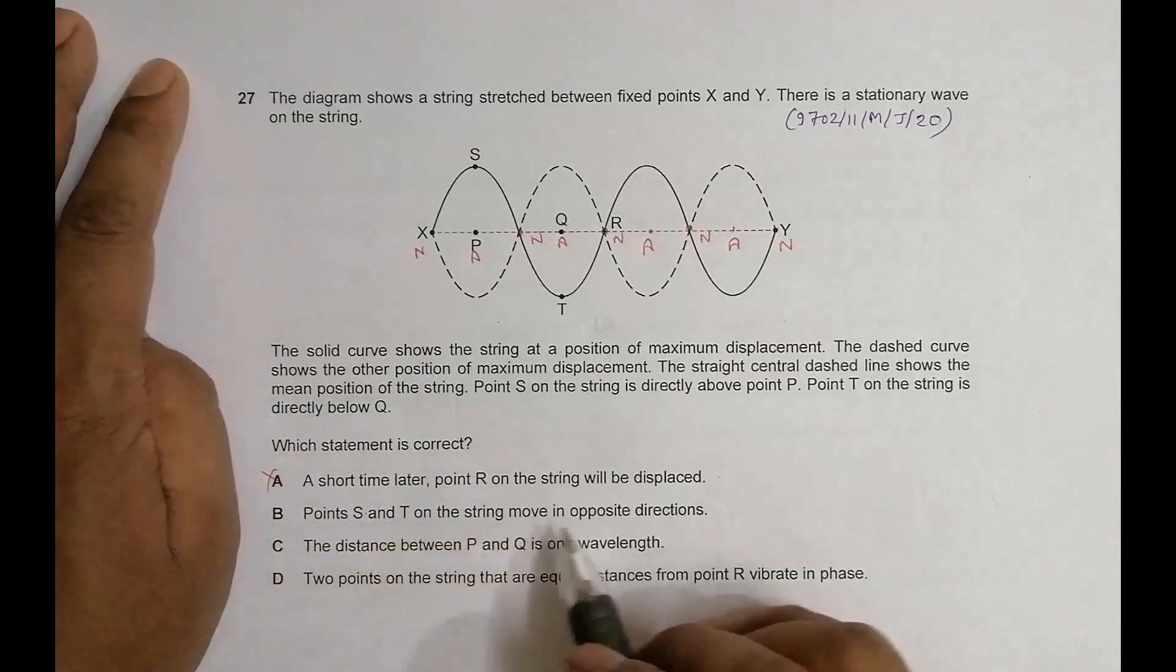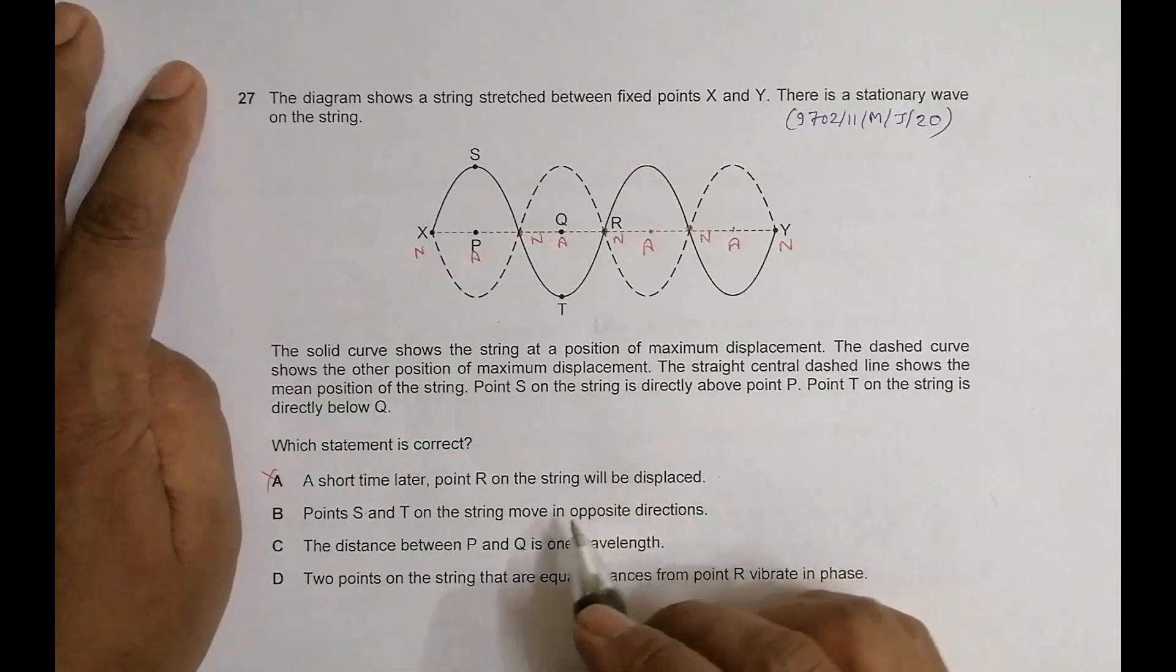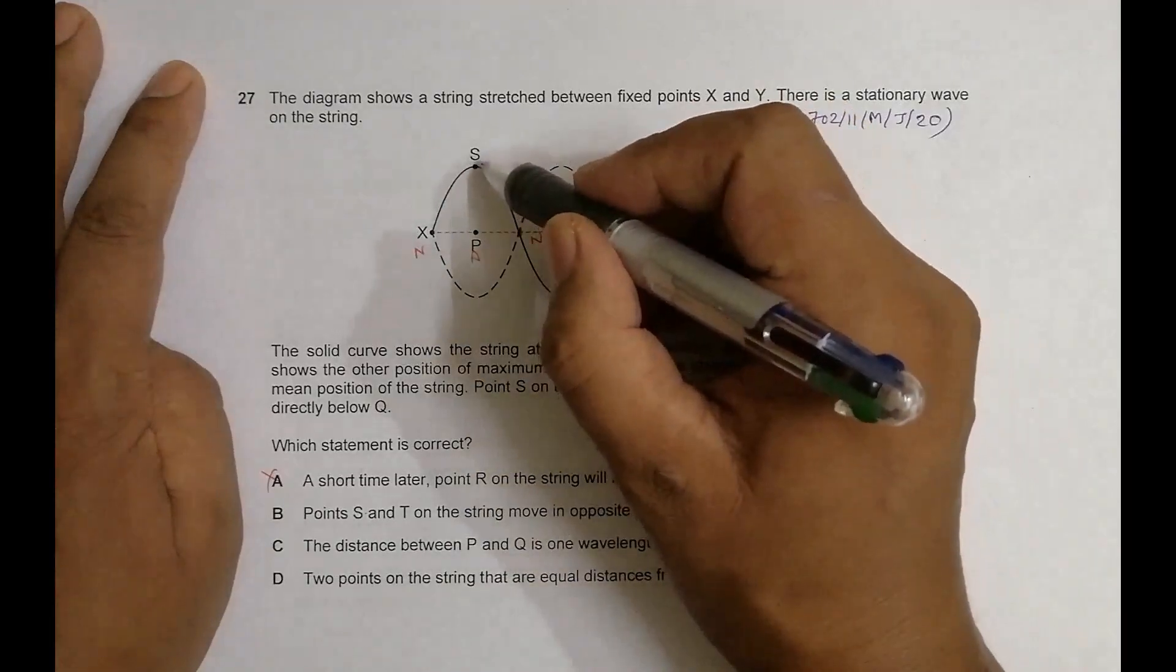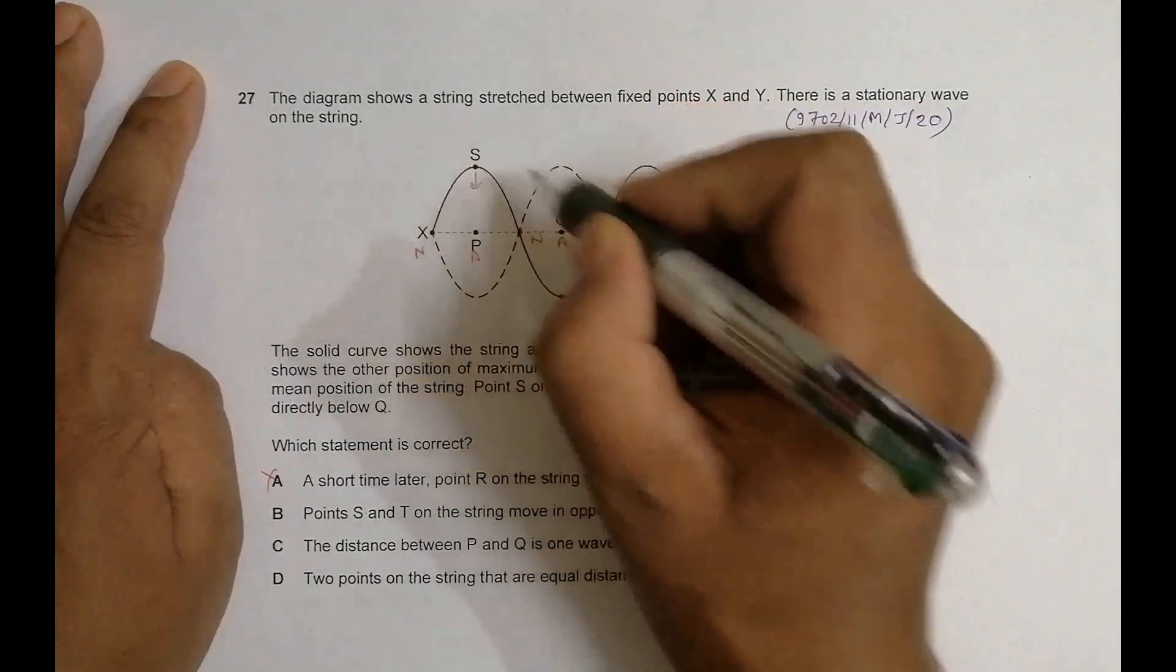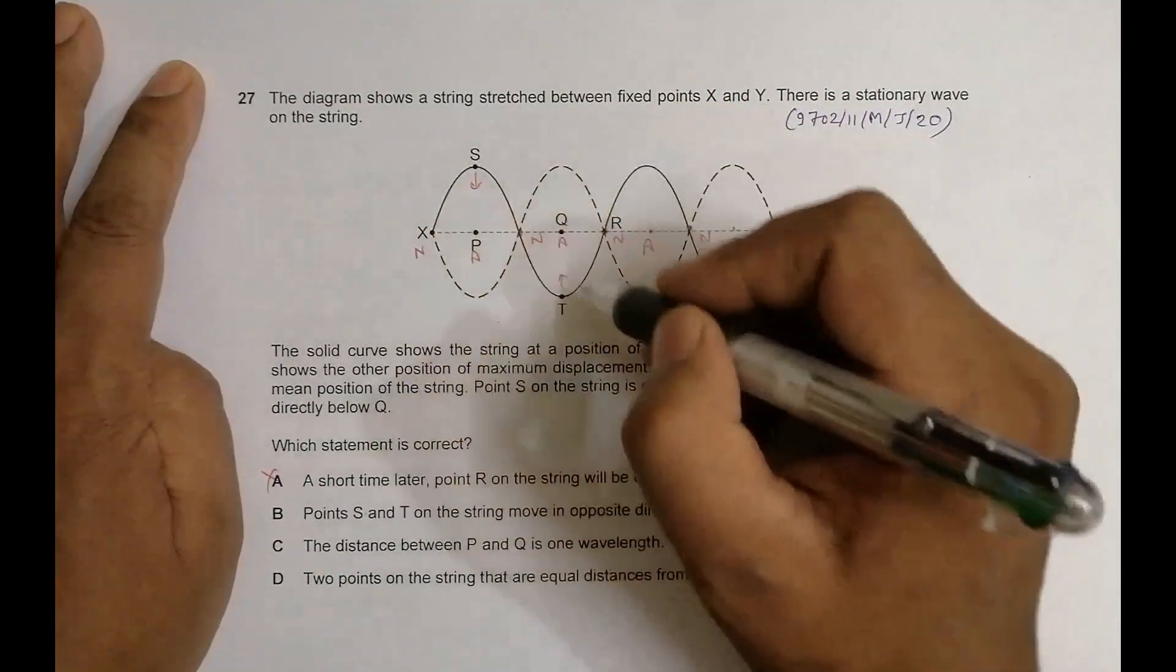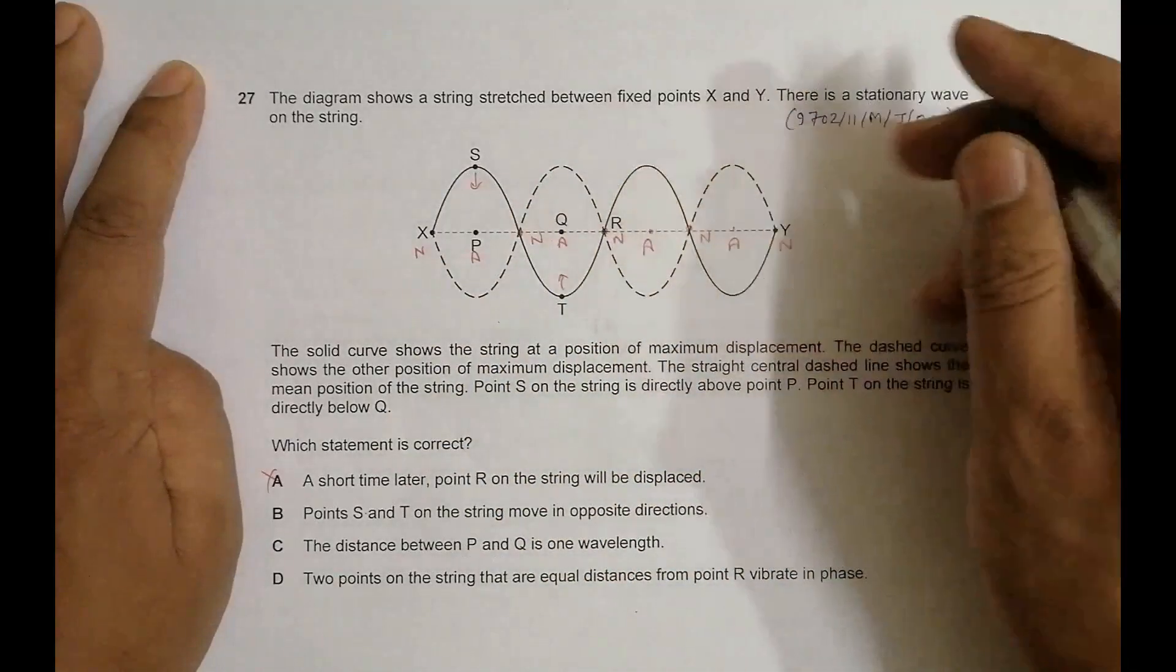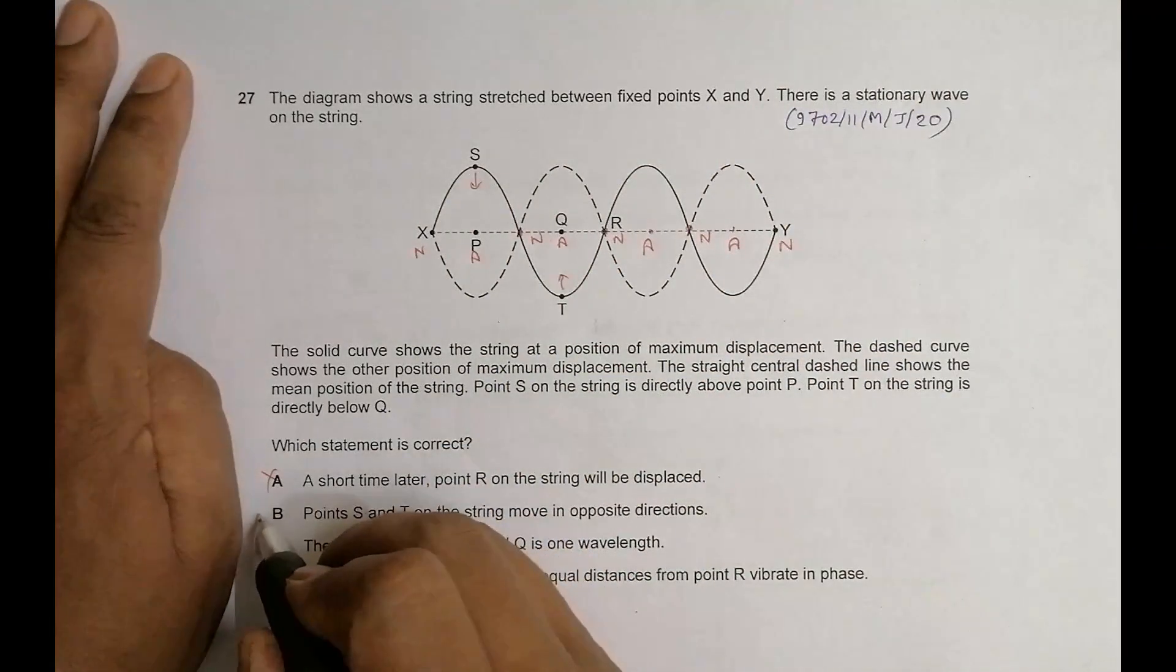Number B: points S and T on the string move in opposite directions. S is at the highest point, T at the lowest point. After some time it will come down and it will go up. Their position is opposite and their movement is also opposite. So this seems to be a correct choice.